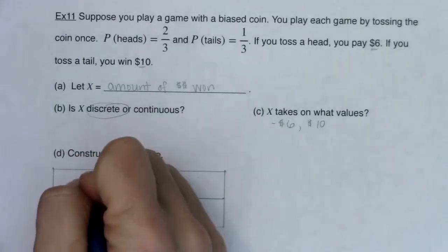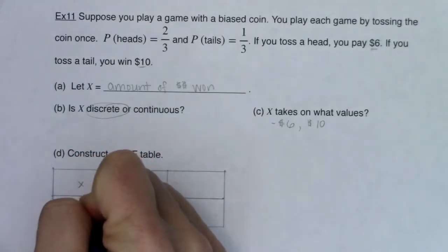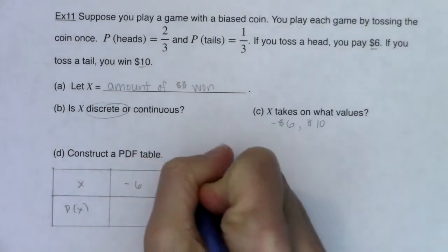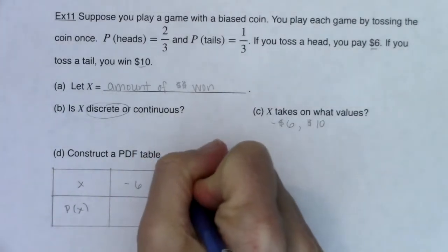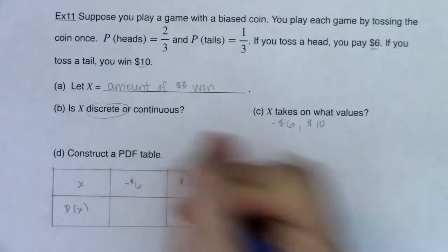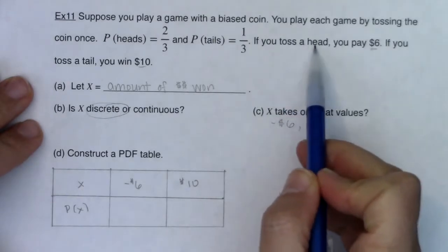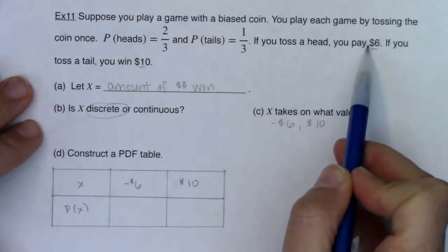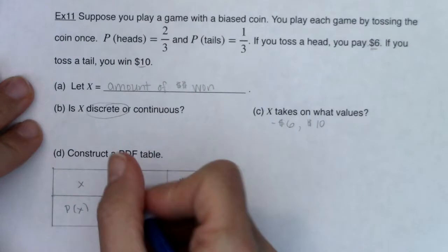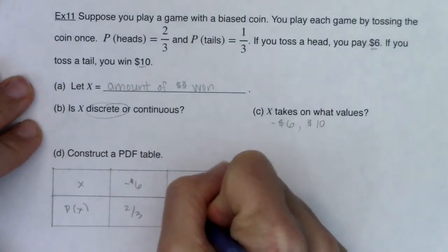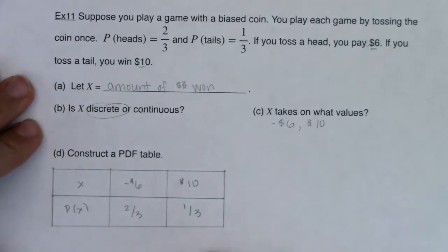I'm always going to put x in the top row, p of x on the bottom row. My two values were negative 6 and 10. We'll put the dollar sign, we'll just keep the units on there. And then what are the probabilities of each of these? So it said if you toss a head, you pay 6. And the probability of tossing a head was 2 thirds. And the probability of tossing a tail was 1 third. And you can take note that these probabilities do add up to 1.